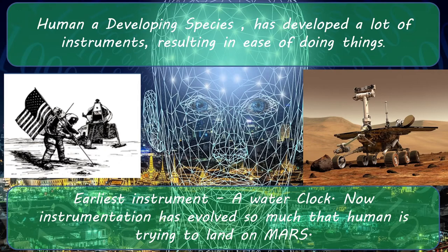Humans have been a developing species and they have used their mind to develop a lot of instruments which always resulted in ease of performing tasks. Be it the early age of human development when they started using a water clock, or the current era when humans have developed a rocket to land on the moon and are now planning to land on Mars — instruments have always evolved and are still evolving in the best possible way.